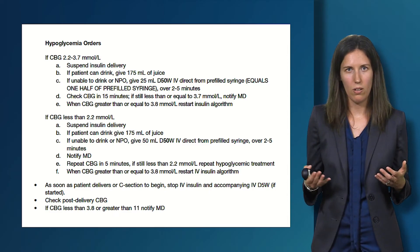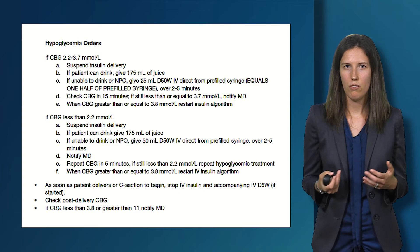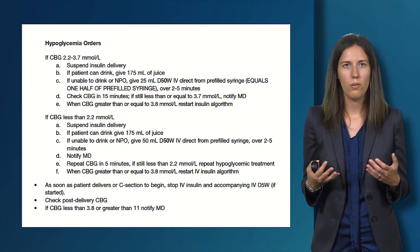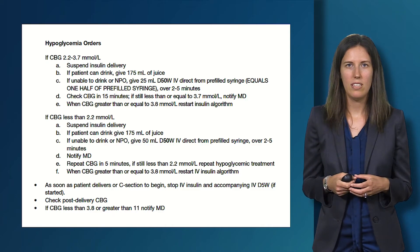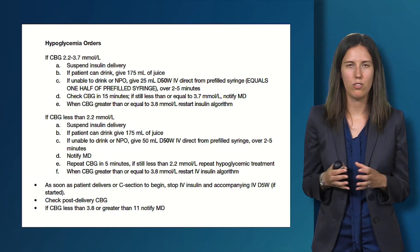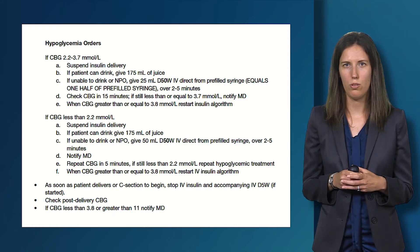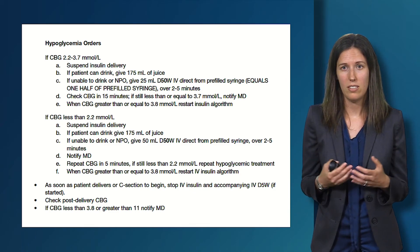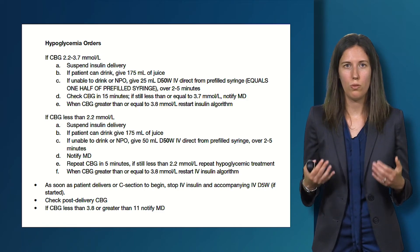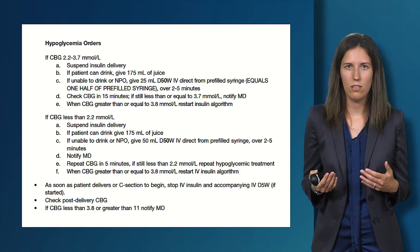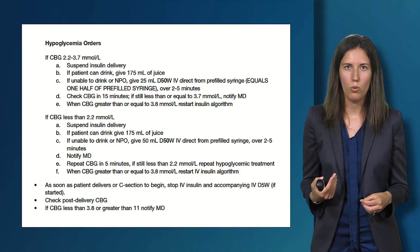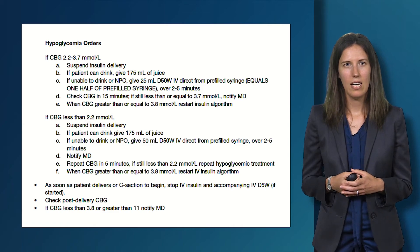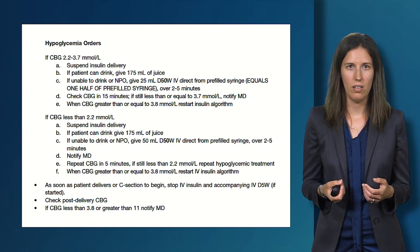If the capillary blood glucose is very low — less than 2.2 mmol/L — IV insulin is stopped if running. If the patient can drink, treat with oral juice; if NPO or unable to drink, treat with IV D50W using the entire pre-filled syringe, which is 50 mL, given over two to five minutes. Given the severity, the physician team is notified, and blood sugar is rechecked sooner at five minutes. If still less than 2.2 mmol/L, hypoglycemia is treated again with more juice or more D50W. Once blood sugar is above 3.8 mmol/L, hypoglycemia is resolved and IV insulin can be restarted if it was running.